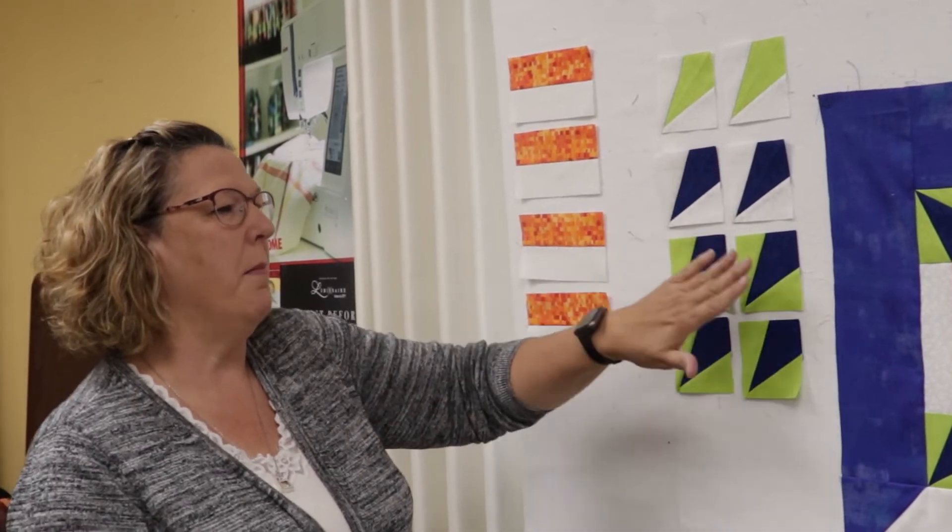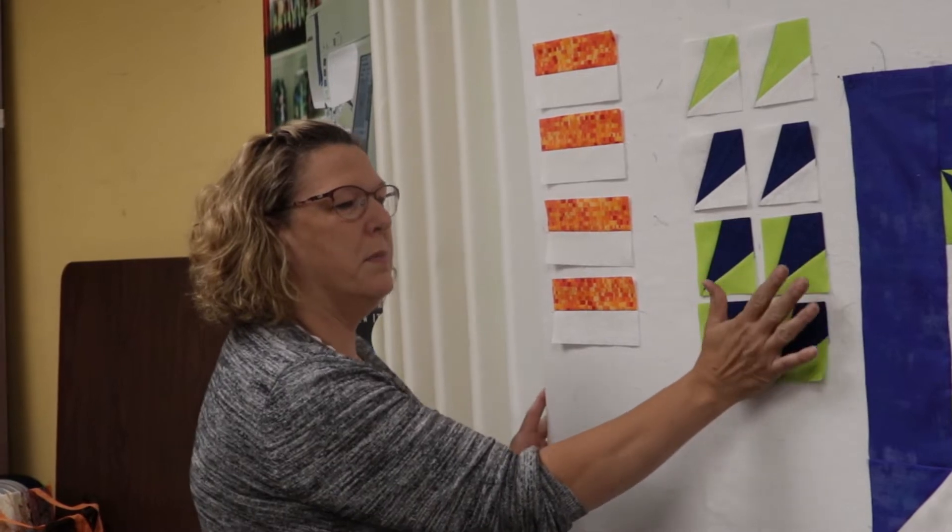So 6 of them have a blue, what I'll call an A unit, which is the little kite shape. And 2 of them have the A unit as a green piece of fabric. The blue, 4 of these blue, have what I call the B units on the sides.